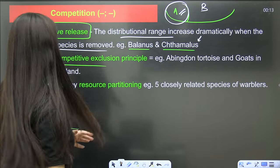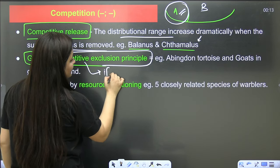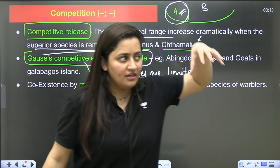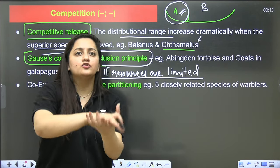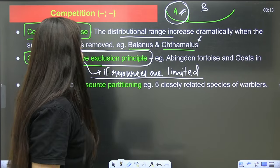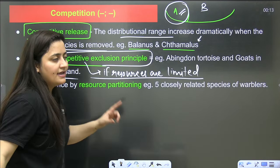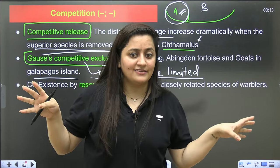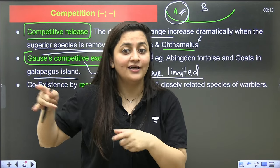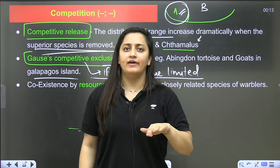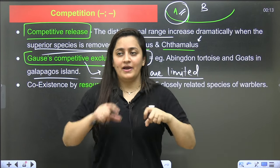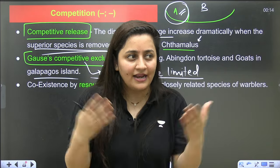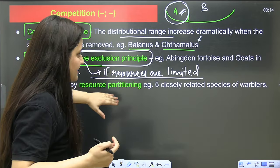Gause's competitive exclusion principle states: if resources are limited and two species compete, the superior one will replace the inferior one. Example: Galapagos tortoises and finches. However, in nature, species often reach a settlement through resource partitioning — dividing resources in time or space to avoid direct competition. Five closely related species of warblers is the classic example of resource partitioning.